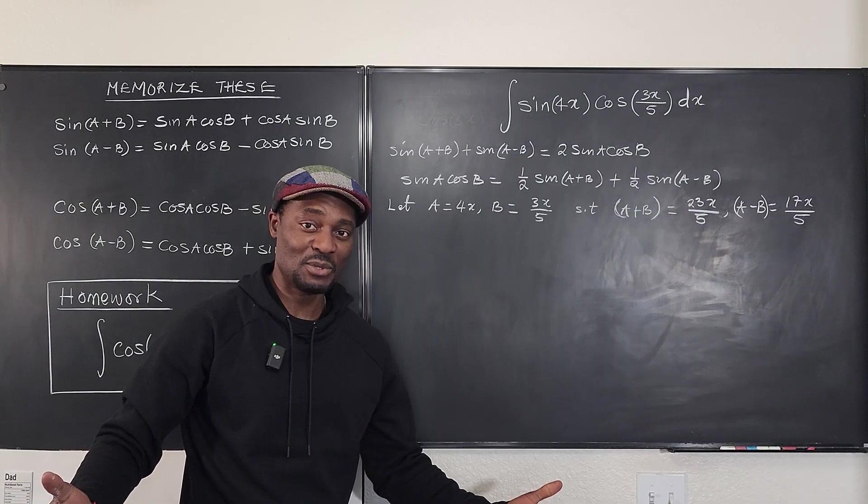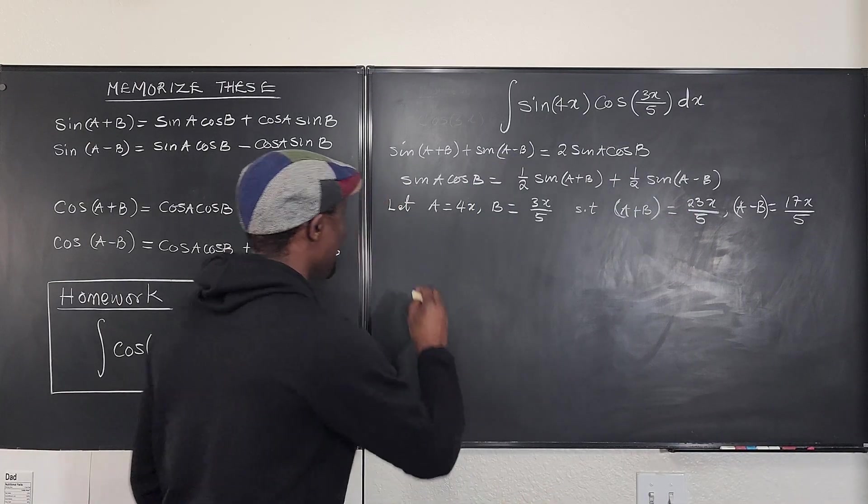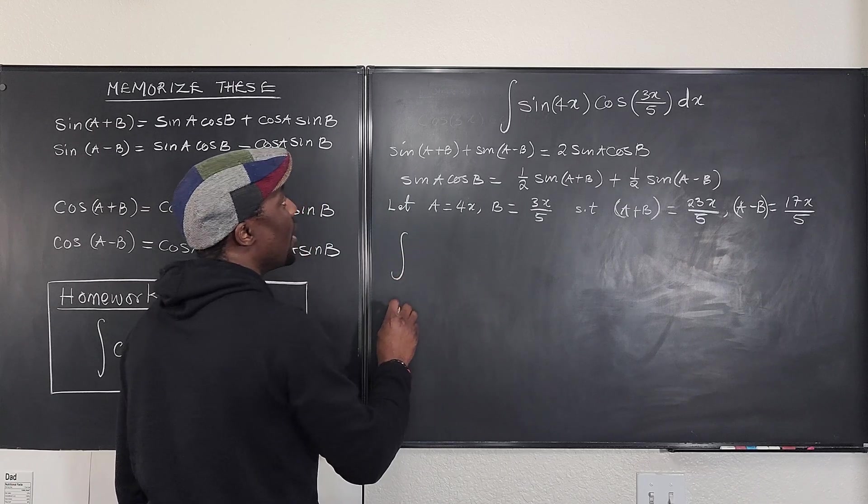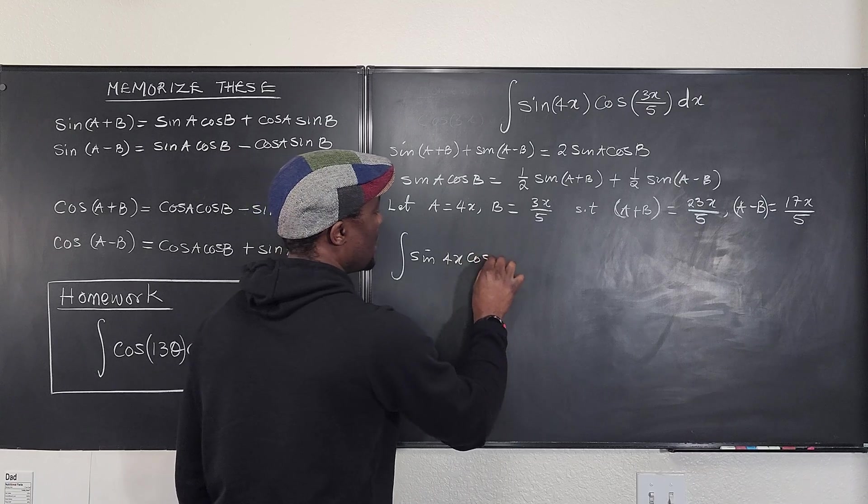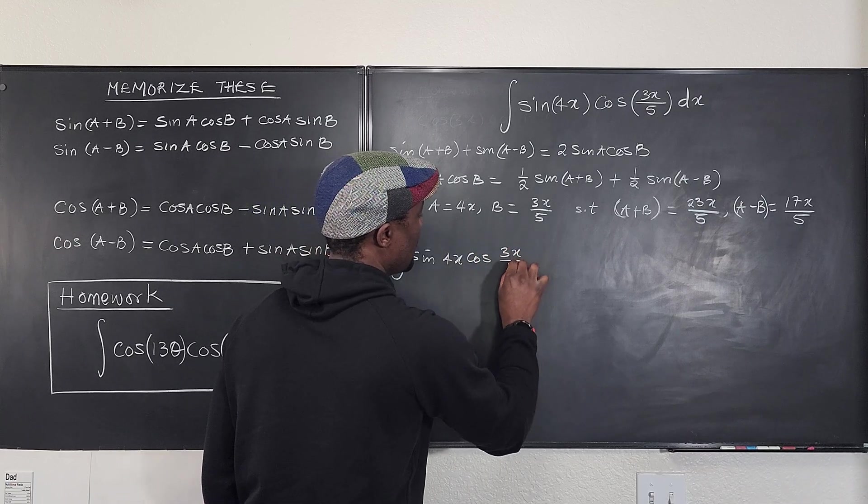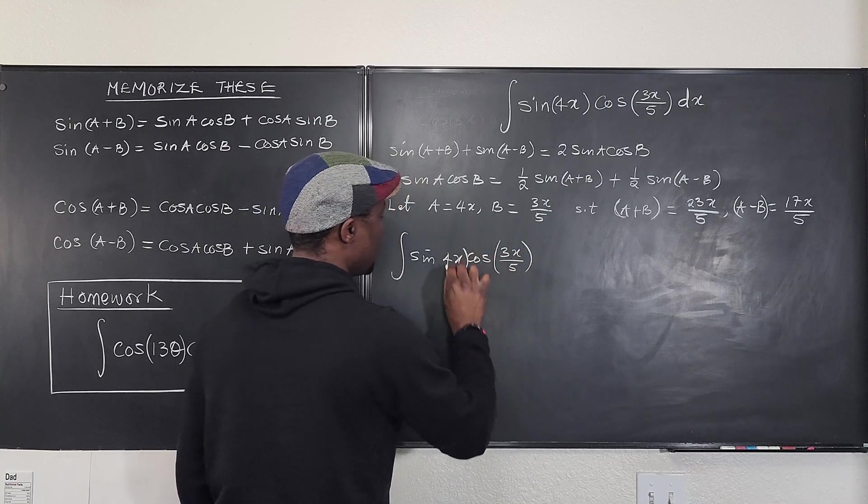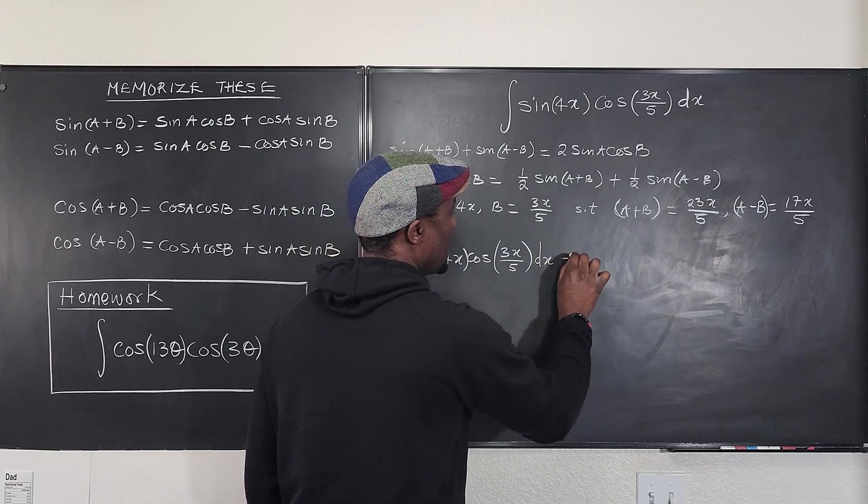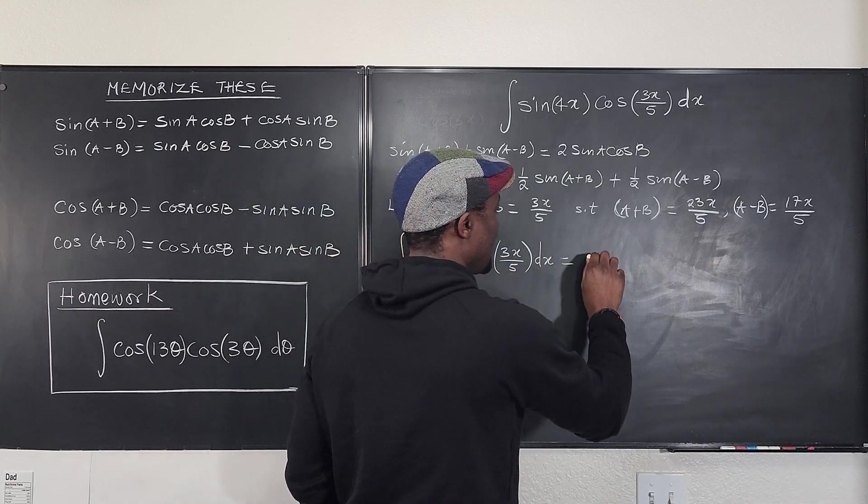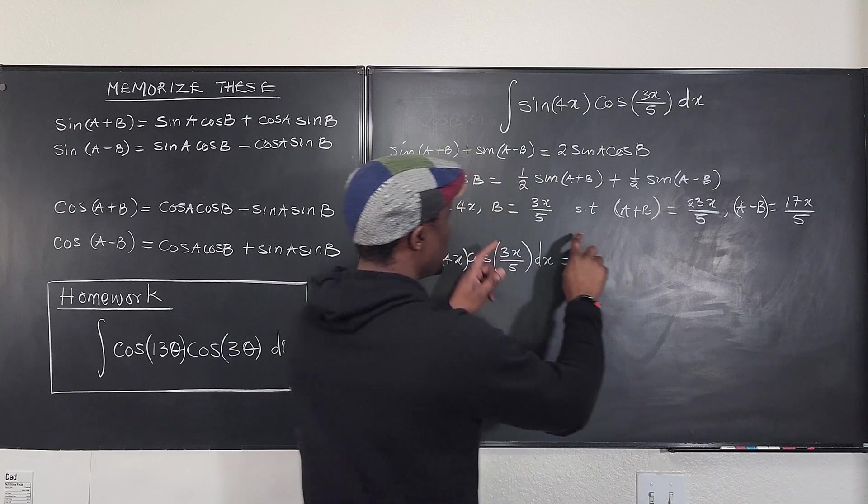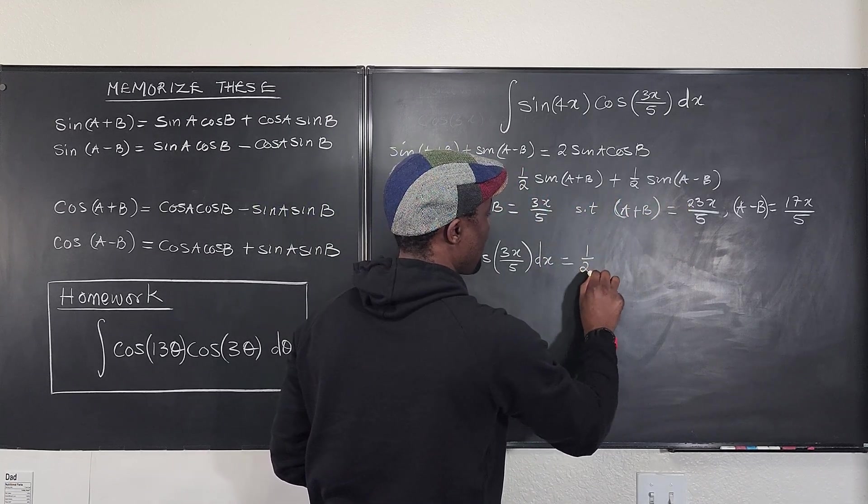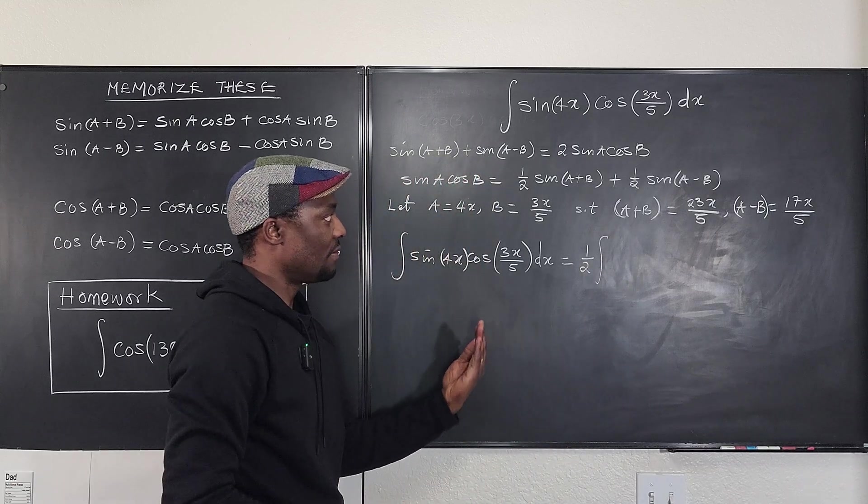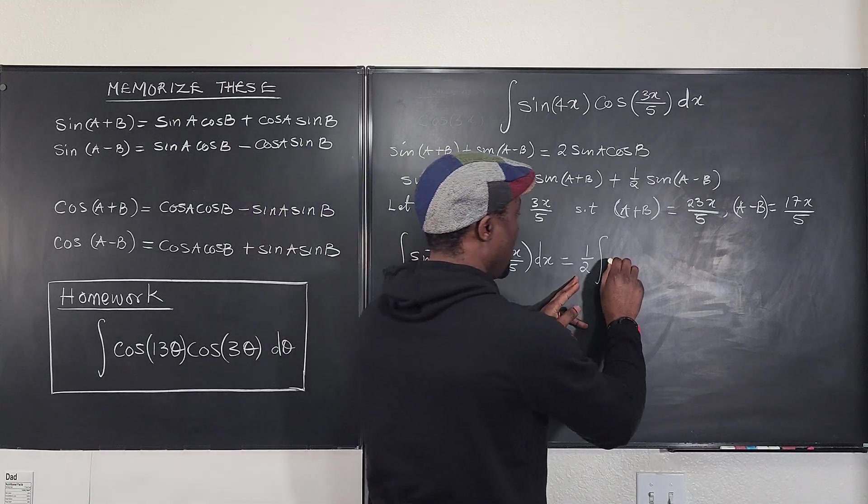So it's time to integrate. Let's do it. We're going to say that the integral of sin(4x)cos(3x/5) is the same thing as the integral... we're going to be integrating this and this, so I'm going to write 1/2 bring it to the front, 1/2 of sin(A+B) which is sin(23x/5)dx.